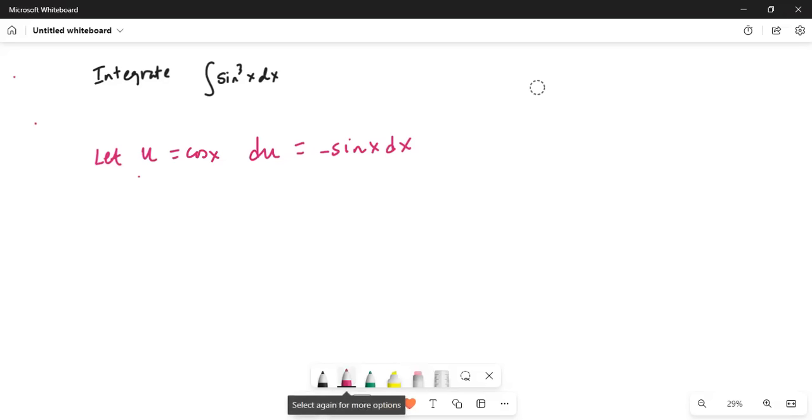u equals cosine x, du equals minus sine x dx. This becomes equal to integration of sine cubed x dx equals... if I split it up into sin x times sine square x dx. I am writing the cubed x3 as sine x times sine square x dx.